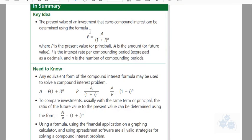Present value of an investment that earns compound interest can be determined using this formula. So this is the one we just discovered here, where P is the present value or principal, A is the amount or future value, i is the interest rate per compounding period as a decimal, and n is the number of compounding periods. So this one is the key idea for this section.